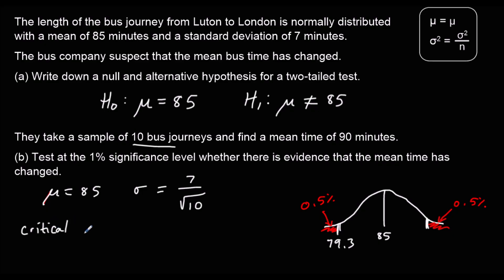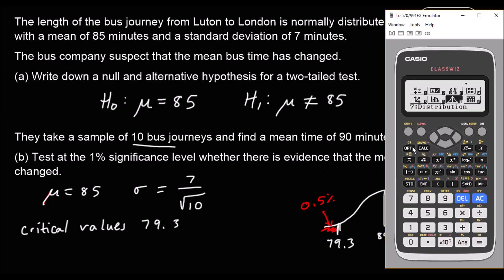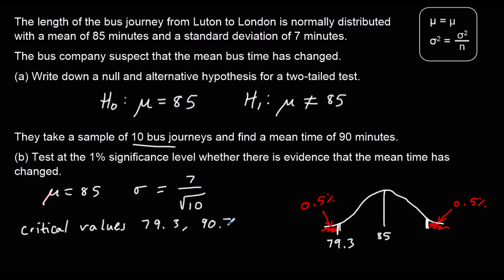So the critical value on the lower end is 79.3, meaning the critical region is less than 79.3. We'll do the same again, this time with an area of 99.5%. The mean and standard deviation are the same, and that gives 90.7. So our most extreme 1% is less than 79.3 or more than 90.7, and our sample mean time is 90 minutes, which is in the acceptable region.